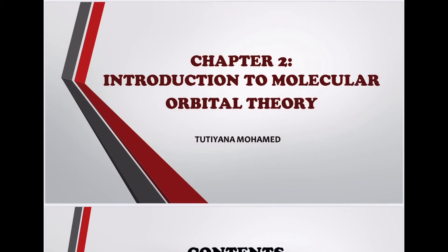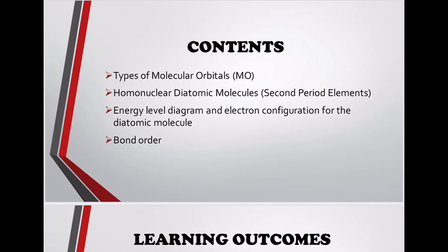Chapter 2: Introduction to Molecular Orbital Theory. Contents include: types of molecular orbitals, homonuclear diatomic molecules, second period elements, energy level diagrams and electron configurations for diatomic molecules, and bond order.